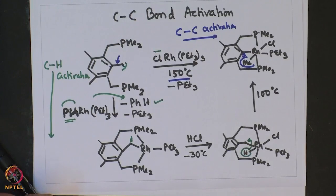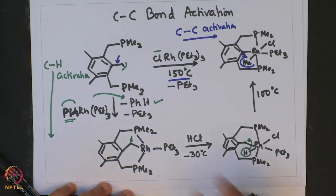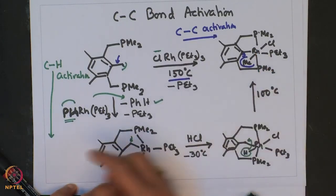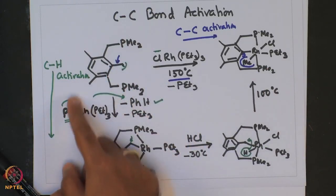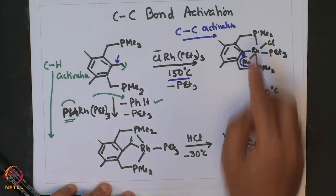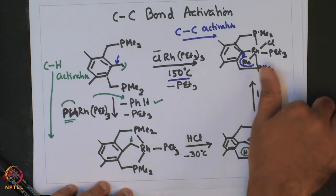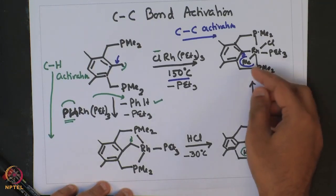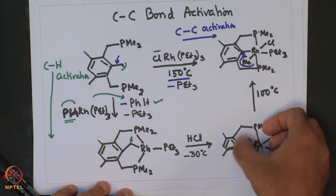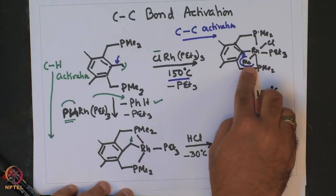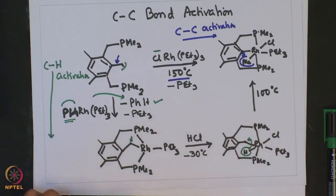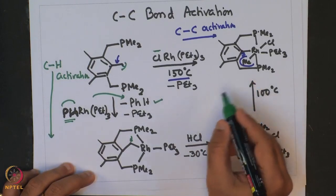This is a very nice demonstration of how the same product obtained by C-C activation under very high temperature can also be competitively obtained by the more favorable C-H activation, followed by oxidative addition of HCl, and heating — the oxidative addition product finally gives the C-C activated compound. The protonation of the methyl group and its subsequent cleavage results in the rhodium–methyl group equivalent to that obtained by direct C-C cleavage. This work was done by Milstein.